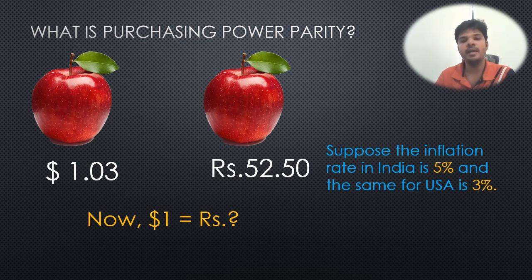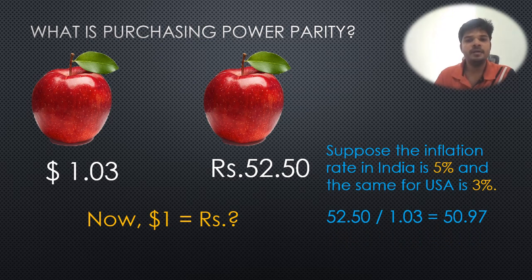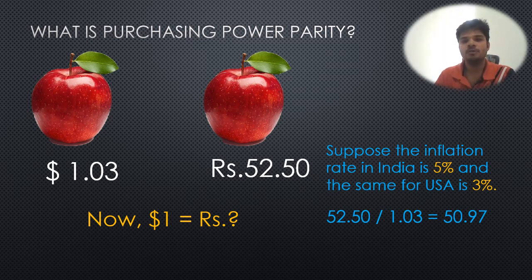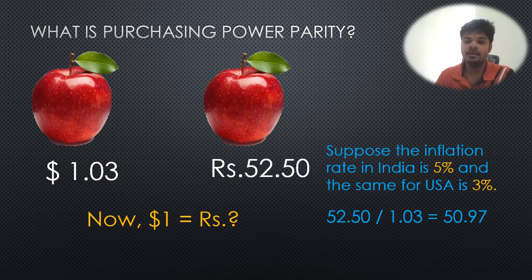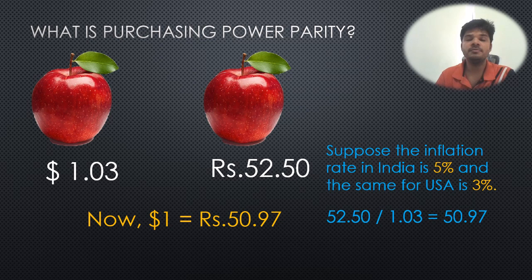To find the new exchange rate using Purchasing Power Parity, we simply calculate 52.50 divided by 1.03, which gives us approximately 50.97. So the new rate of exchange after one year, because of Purchasing Power Parity, can be stated as $1 is equal to ₹50.97. This is how Purchasing Power Parity is applied.